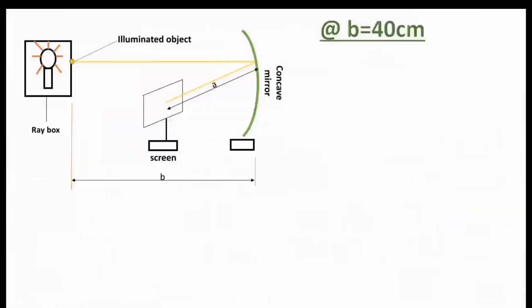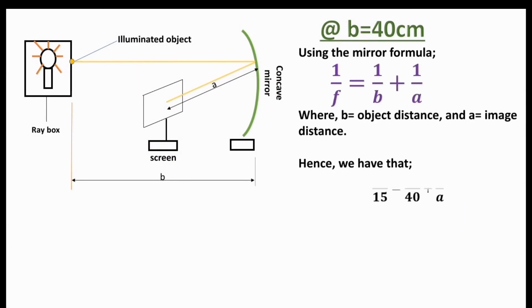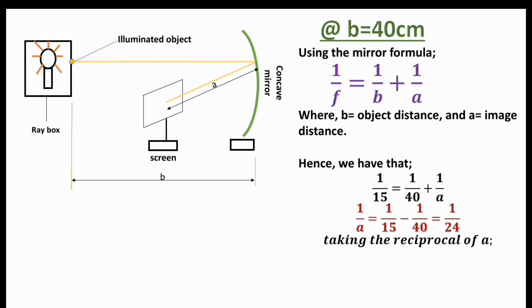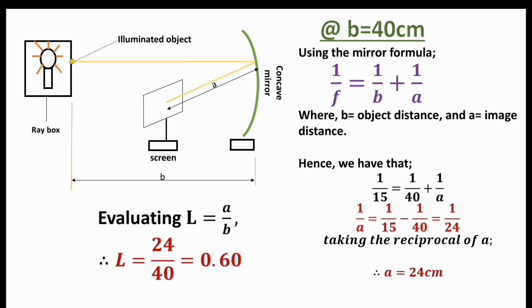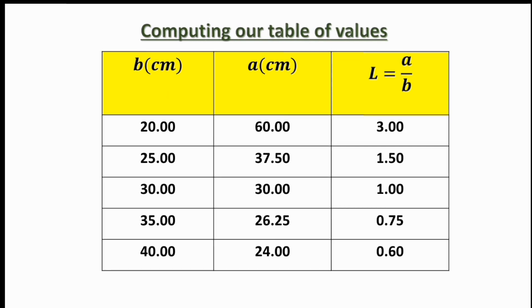When b equals 40 centimeters, using the mirror formula: one over 15 equals one over 40 plus one over a. Simplifying one over a gives one over 24, so a equals 24 centimeters. Evaluating l: 24 over 40 gives l = 0.6. In the table: b = 40.00 cm, a = 24.00 cm, l = 0.60.